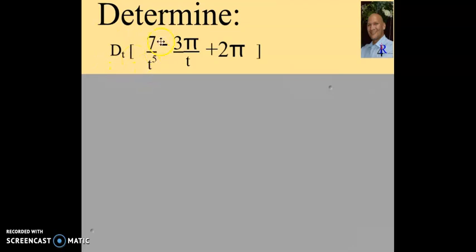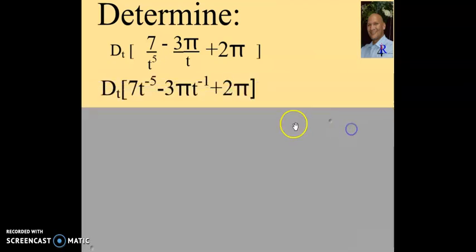So firstly we will write these fractions as 7t to the power of minus 5, 3π times t to the power of minus 1 plus 2π.